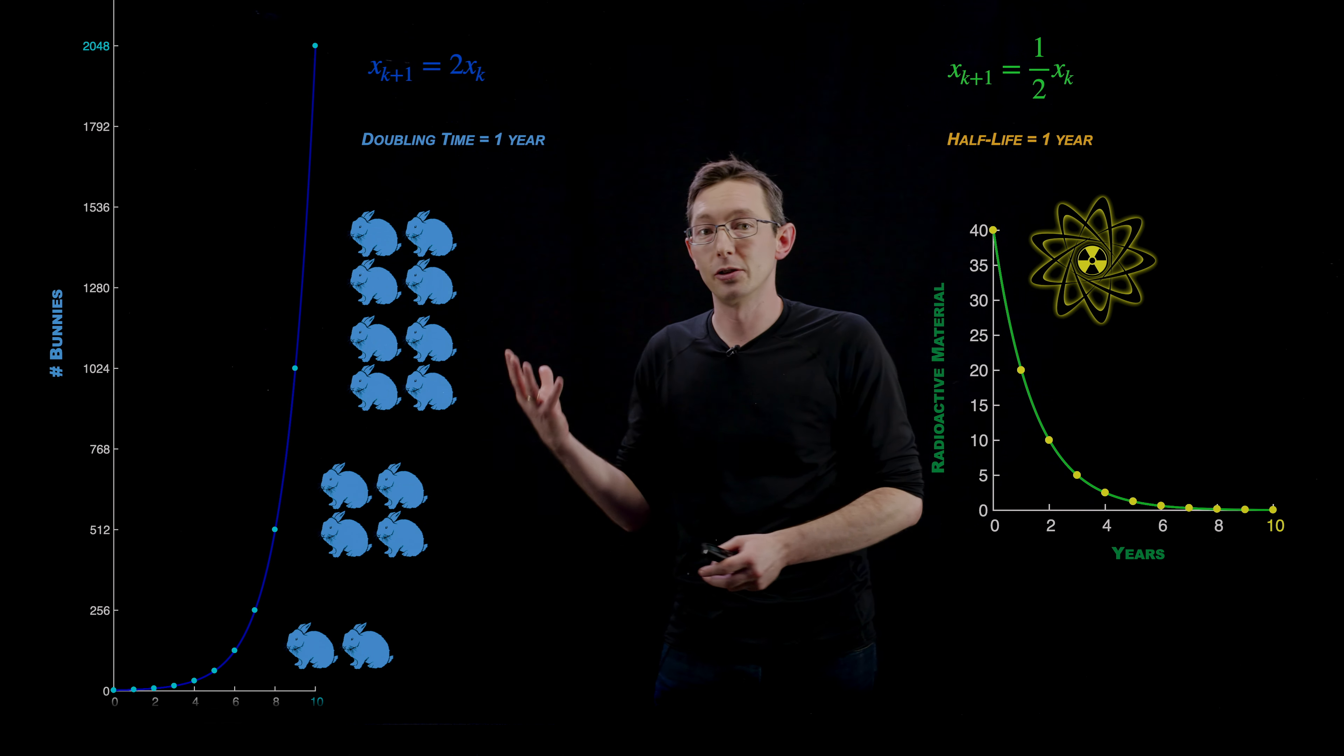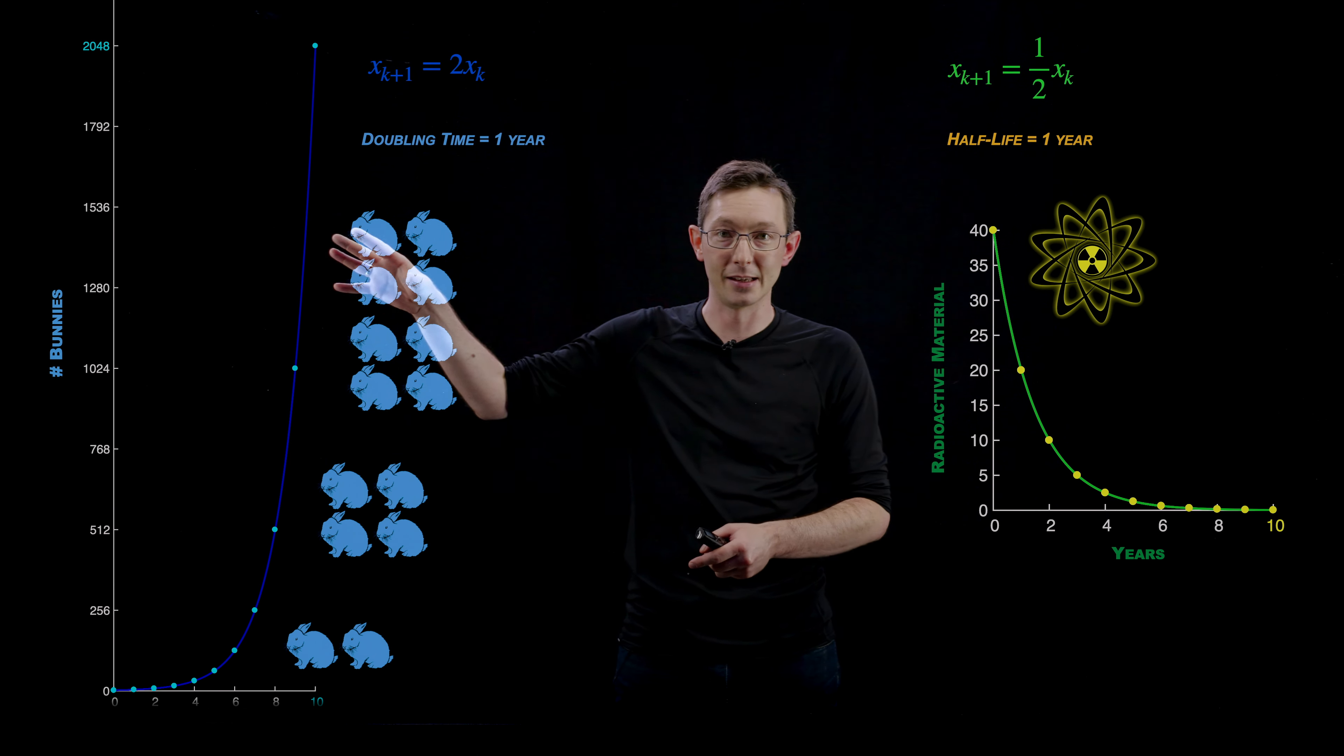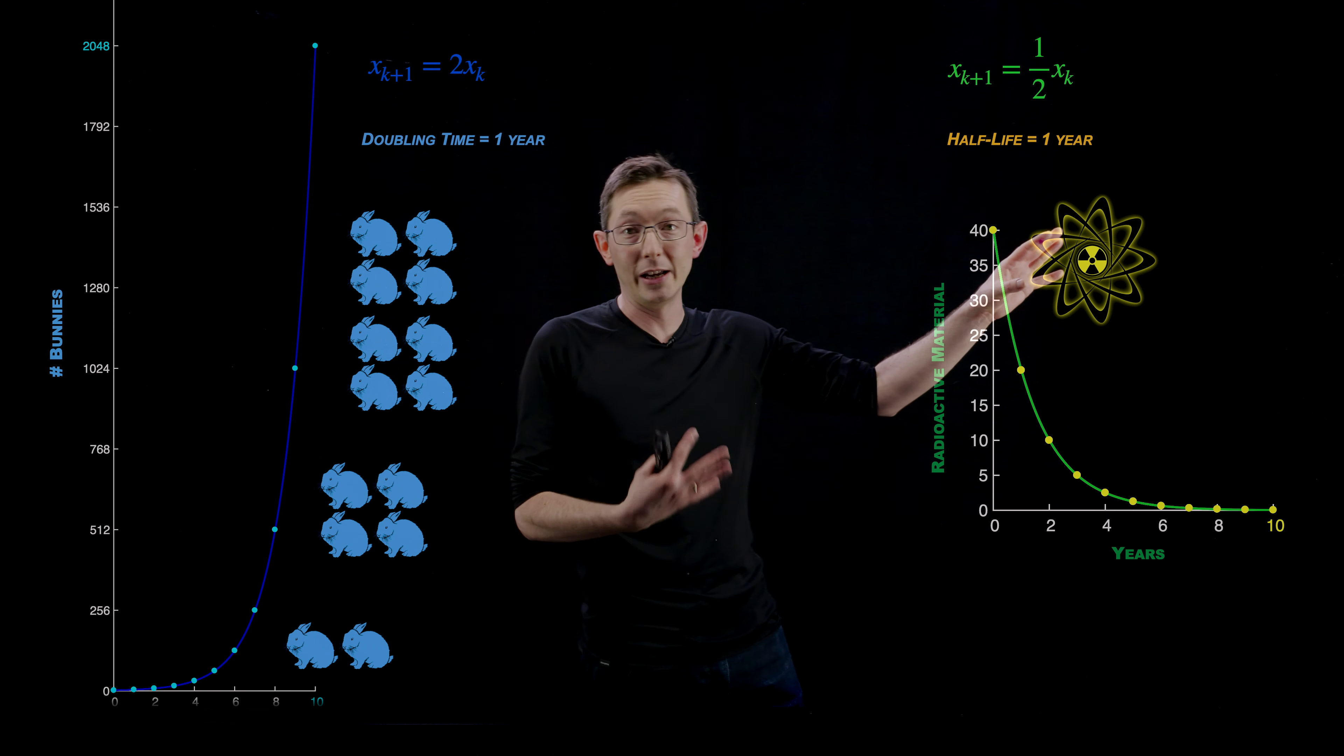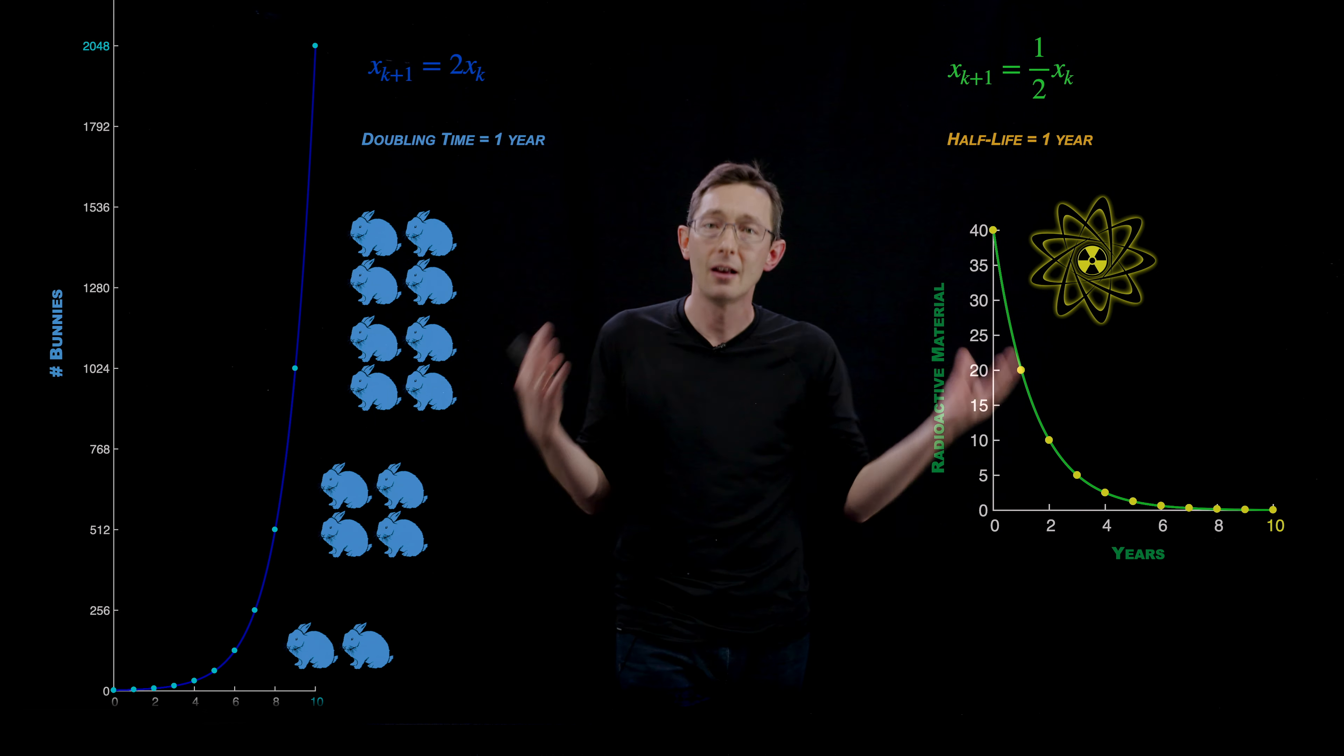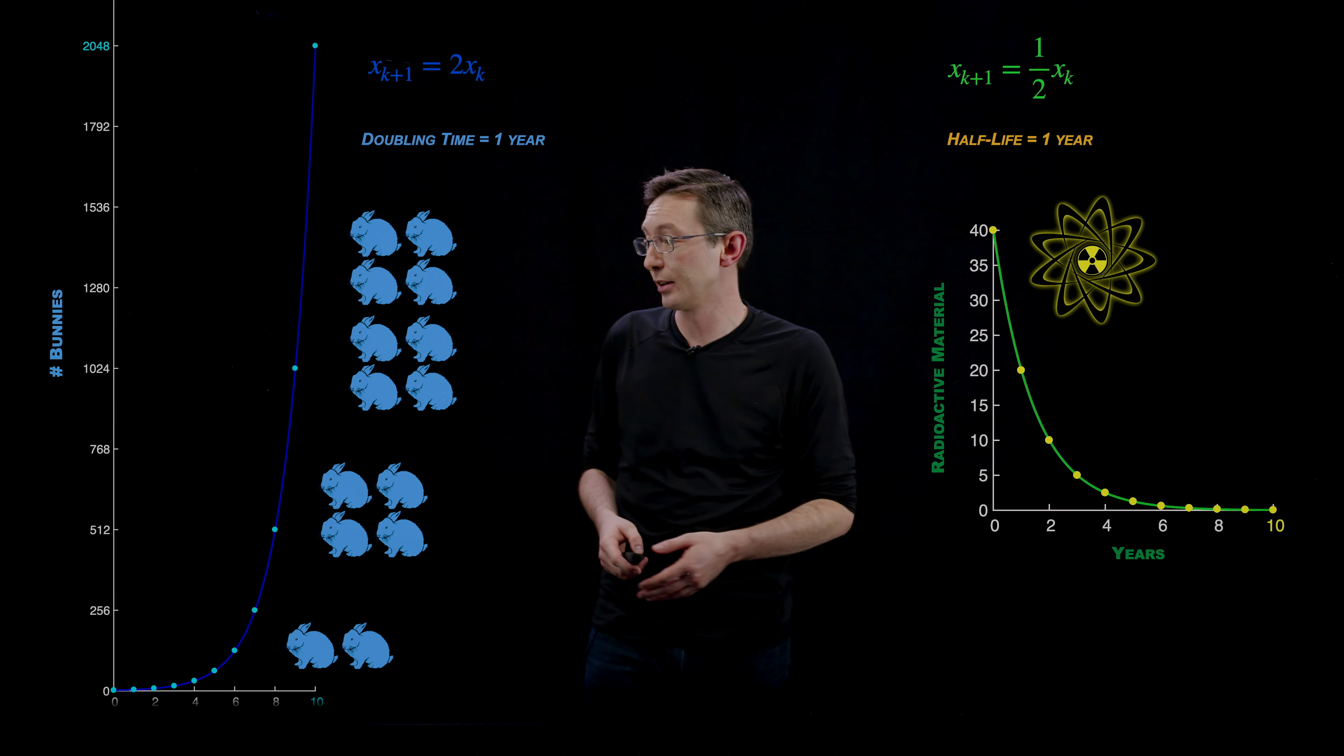So we're going to look at different processes that give rise to exponential growth and exponential decay. I'm going to talk about the classic population growth. So if you have two bunnies one year, you'll have four bunnies the next, you'll have eight bunnies the next and so on. Similarly with radioactive decay, if I have something that has a half-life of one year, if I have 40 grams this year, I'll have 20 grams next year and so on. So we'll go through some examples of systems that have exponential growth and exponential decay, like compound interest in the bank is a really good example.